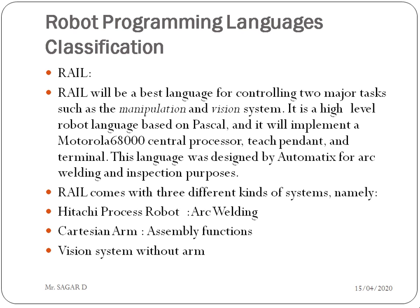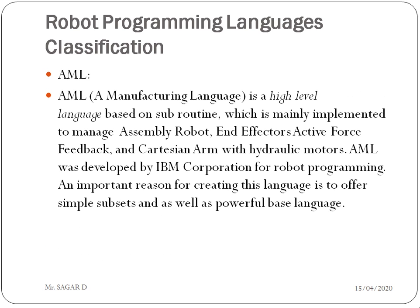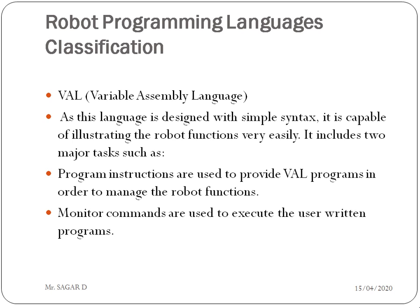The second language is AML — A Manufacturing Language. It is a high-level language based on subroutines, mainly implemented to manage assembly robots, end effector active force feedback, and a Cartesian arm with hydraulic motor. It is basically used for manufacturing. The third language is VAL — Variable Assembly Language. This language is designed with simple syntax, capable of illustrating robot functions very easily. It includes two major tasks: program instructions used to provide